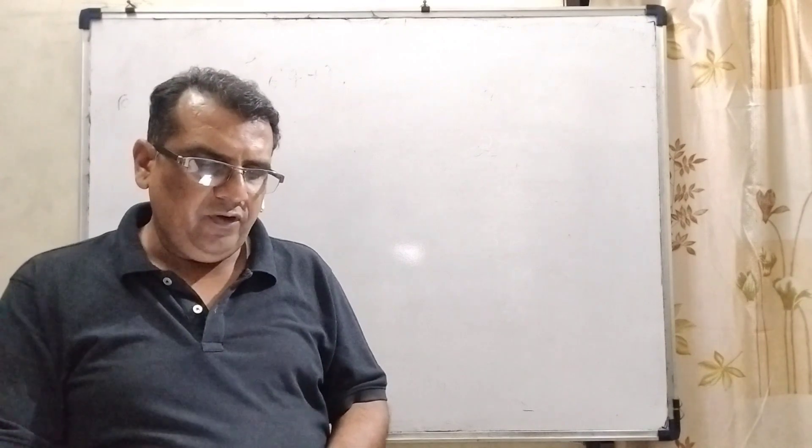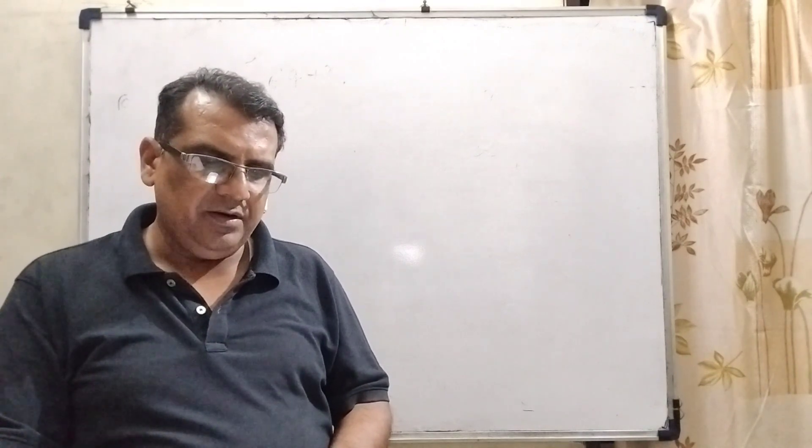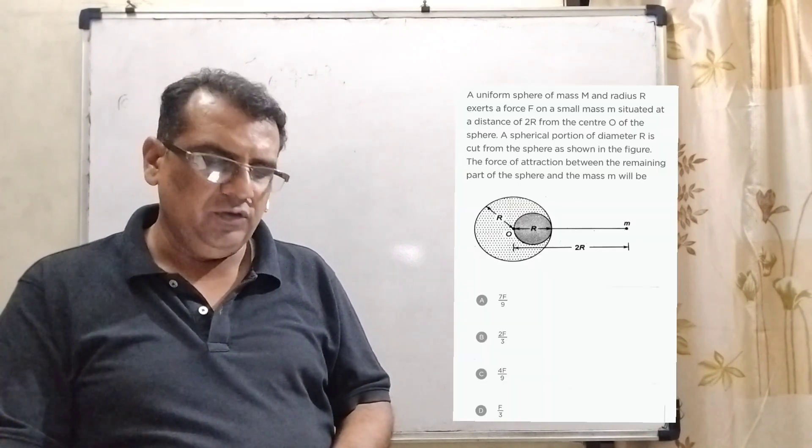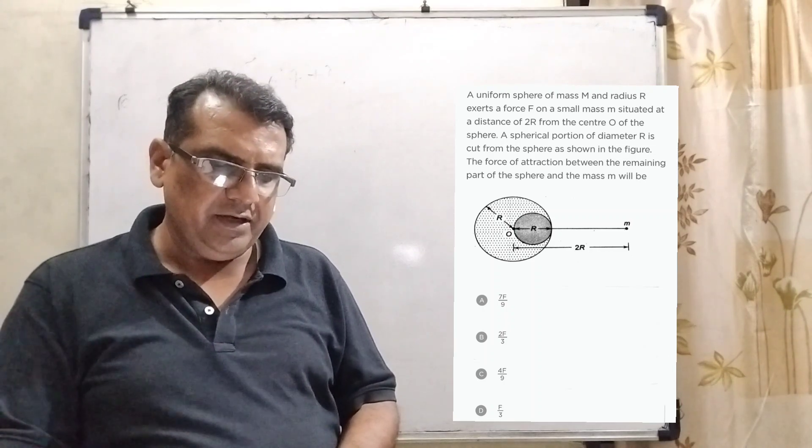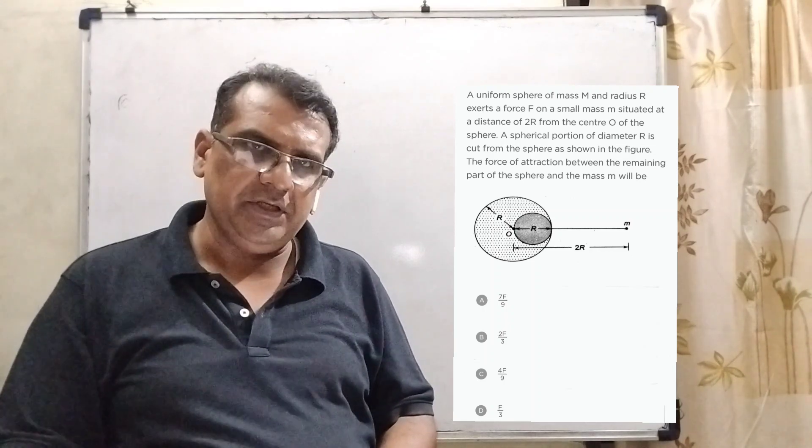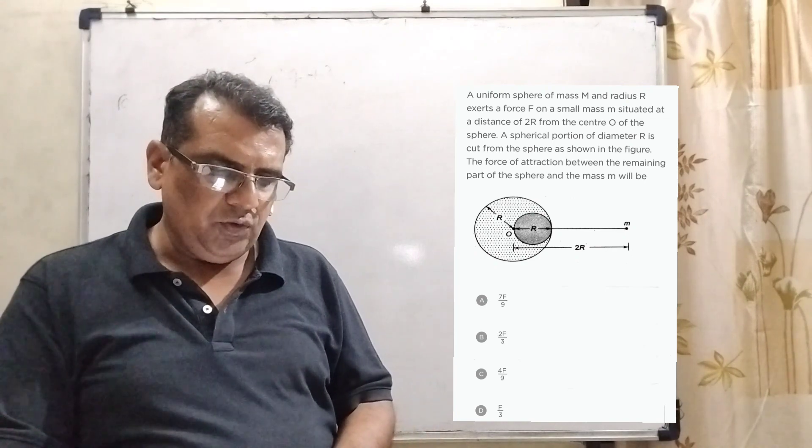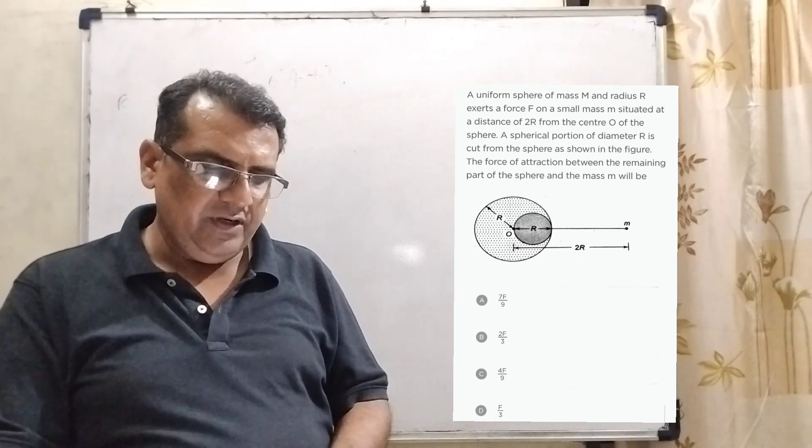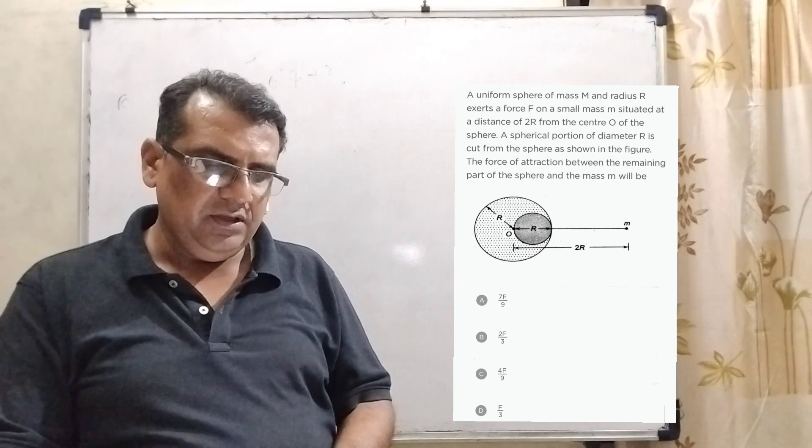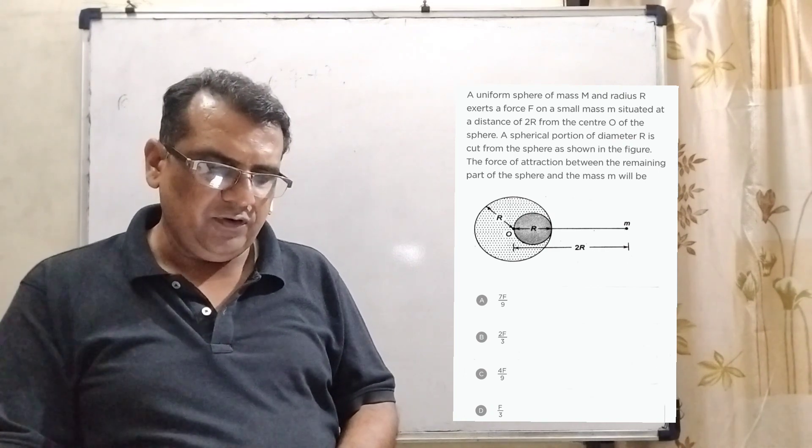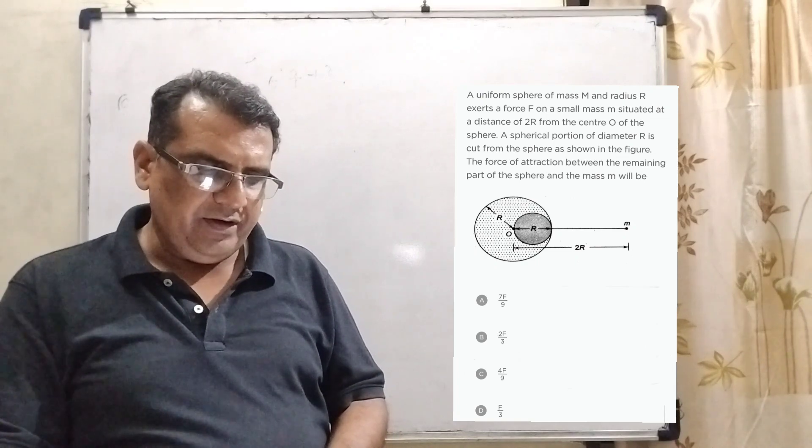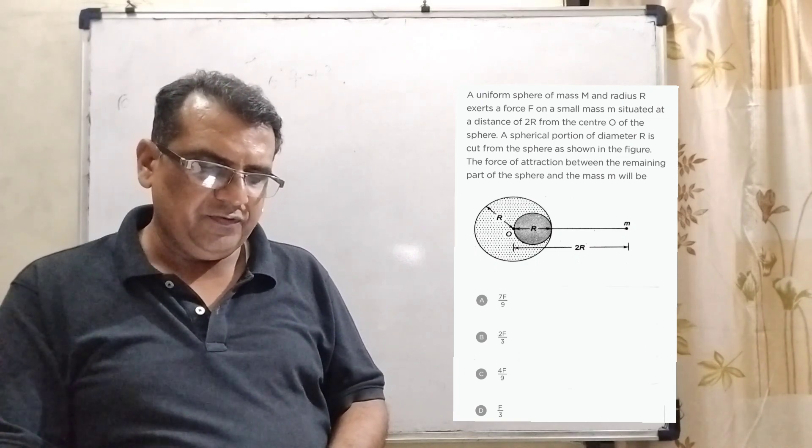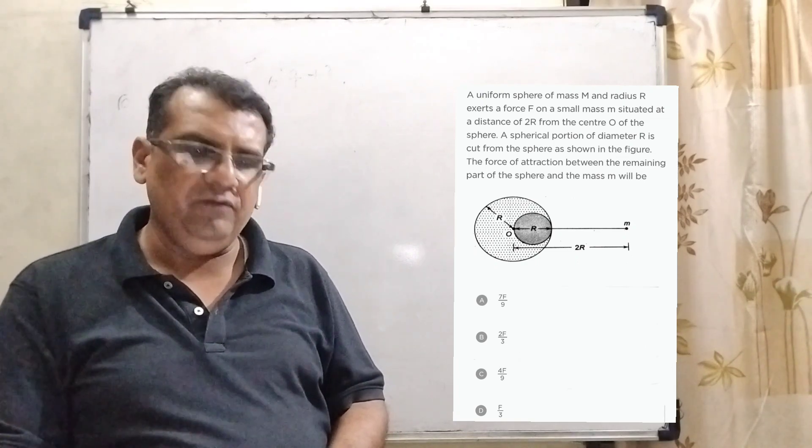Now here is the question. A uniform sphere of mass capital M and radius capital R exerts a force F on a small mass m situated at a distance of 2R from the center O of the sphere. A spherical portion of diameter capital R is cut from the sphere as shown in the figure. The force of attraction between the remaining part of the sphere and the mass small m will be.